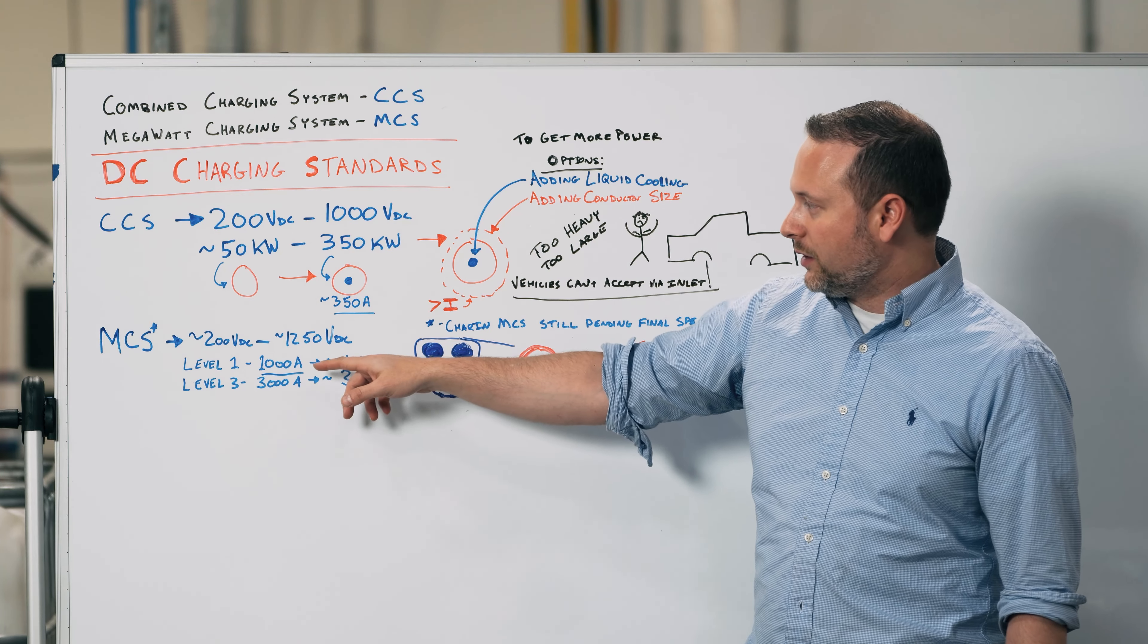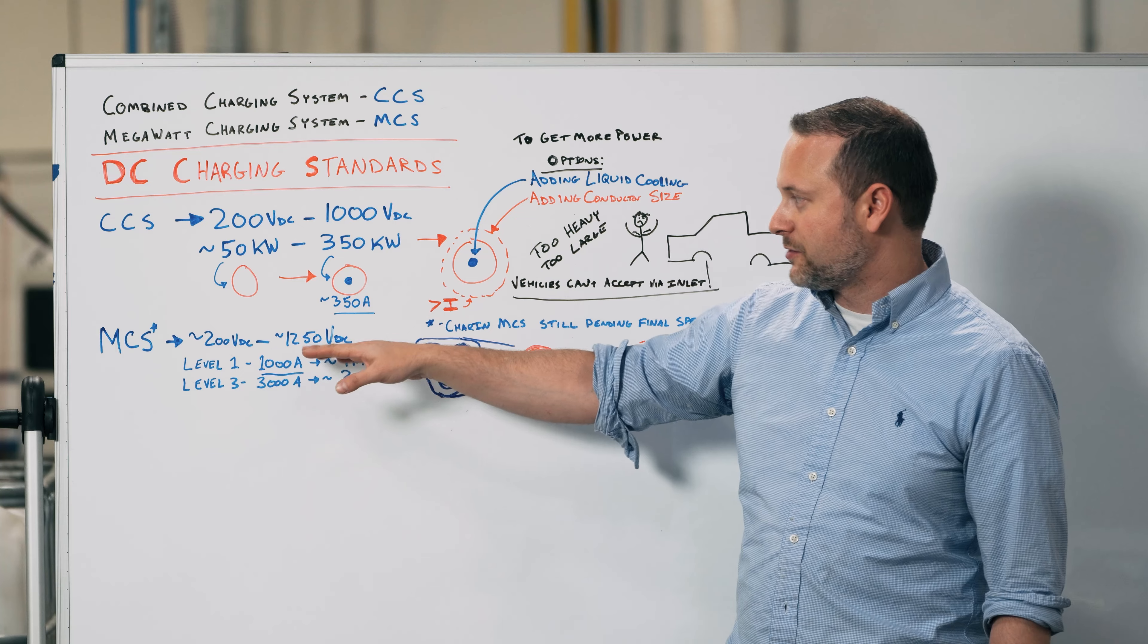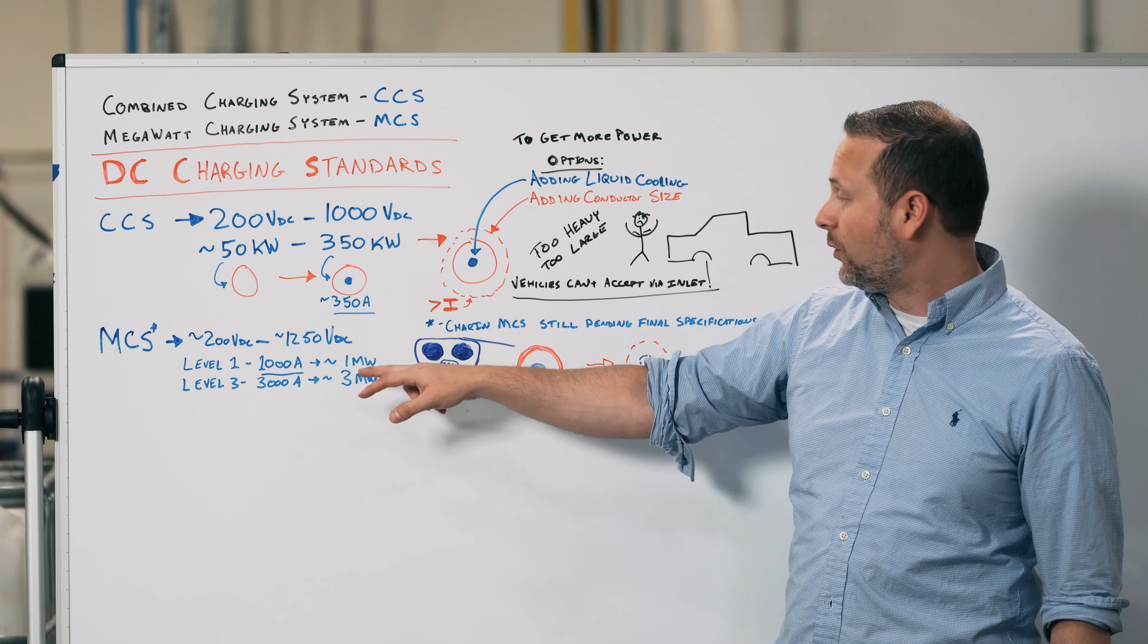For level 1, that's an output of 1,000 amps. And if you push in approximately 1,000 volts DC, that's 1 megawatt.